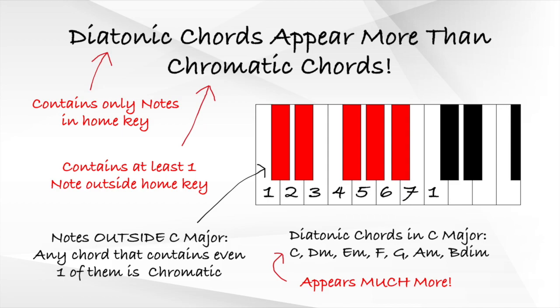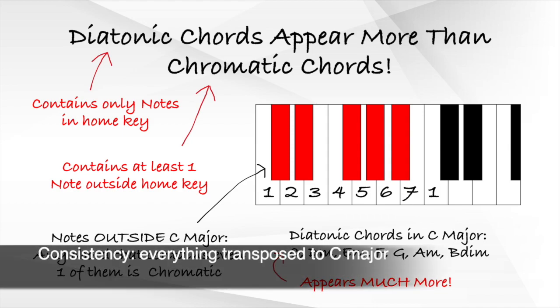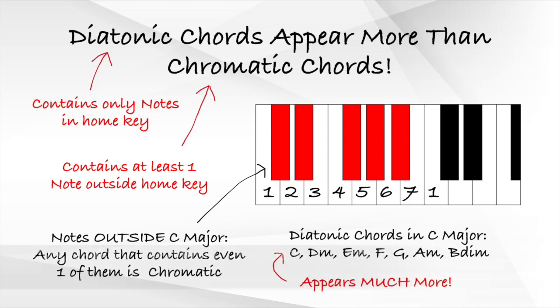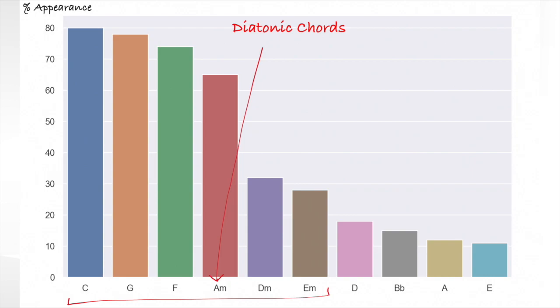To test this statement using a data-driven approach, I collected some data about different songs and their chord progressions from online sources like ultimateguitar.com using some Python programming and analyzed the chord progressions in these songs. For consistency's sake, every song in the dataset has been transposed to C major. As we can see in this chart, the chords that appear the most are our six diatonic chords — C major, G major, F major, A minor, D minor, and E minor — followed by chromatic chords such as D major, D flat major, A major, and so on.